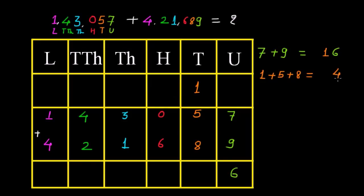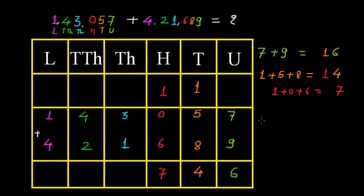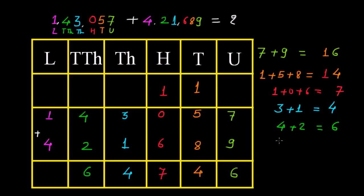So I will write 4 at the tens place in the answer using the same color. We should carry forward the 1 in a different color to the hundreds place. So now 1 plus 0 plus 6 is equal to 7. And then we have 3 plus 1 is equal to 4. Then 4 plus 2 is equal to 6, so we write 6. And then 4 plus 1 is equal to 5.